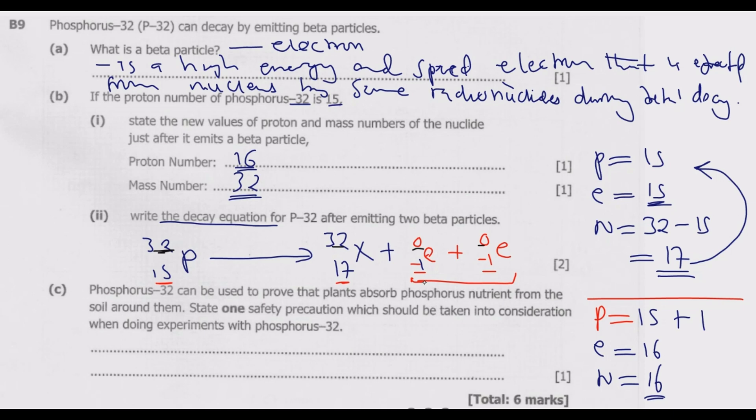Question C: Phosphorus-32 can be used to prove that plants absorb phosphorus nutrient from the soil. State one safety precaution when doing experiments with phosphorus-32.